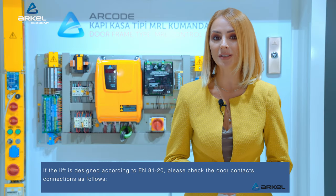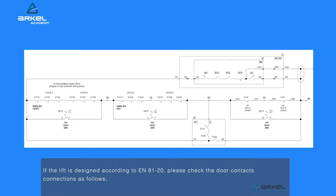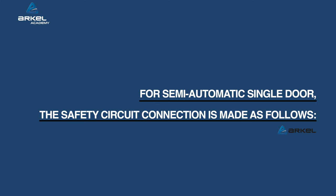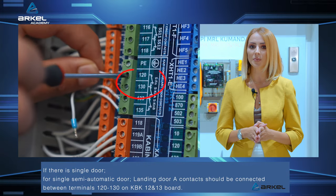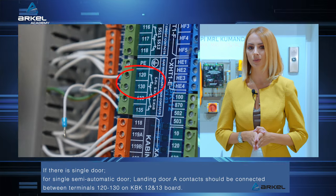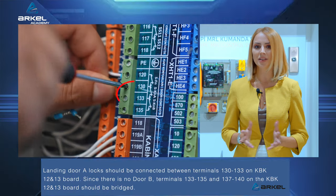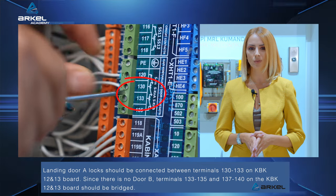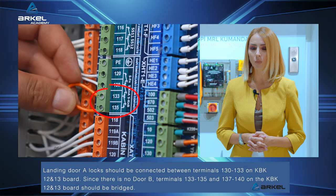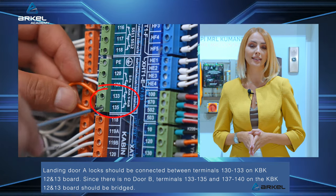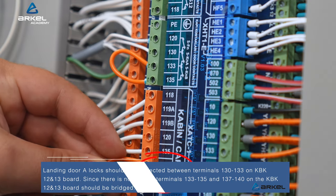If the lift is designed according to EN 8120, please check the door contact connections as follows. If there is a single door or single semi-automatic door, landing door A contacts should be connected between terminals 120 to 130 on the KBK 12 and 13 board. Landing door A locks should be connected between terminals 130 to 133 on the KBK 12 and 13 board. Since there is no door B, terminals 133 to 135 and 137 to 140 on the KBK 12 and 13 board should be bridged.